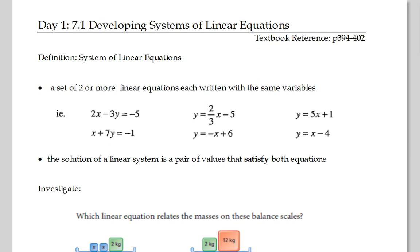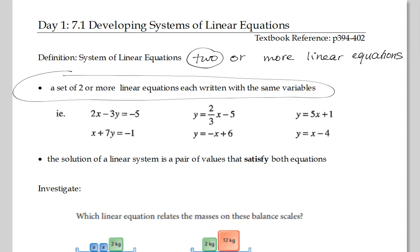So day one of systems of linear equations. You have here a definition at the top. The definition that we're going to need for a system of linear equations is two or more linear equations. It's already written there: a set of two or more linear equations, each written with the same variables. So you have x and y. These are all different examples.